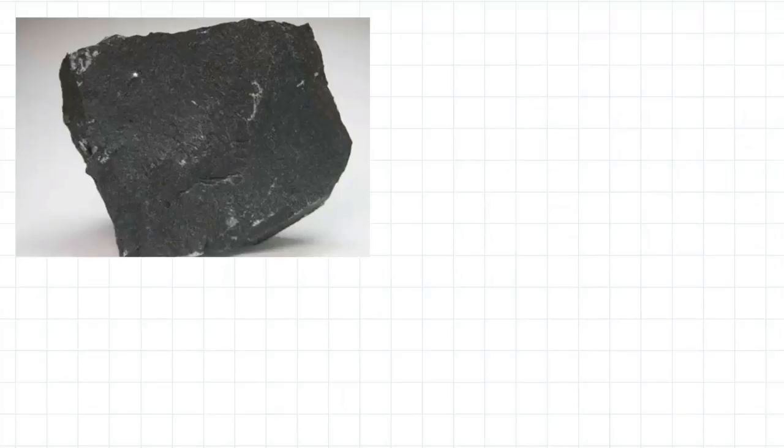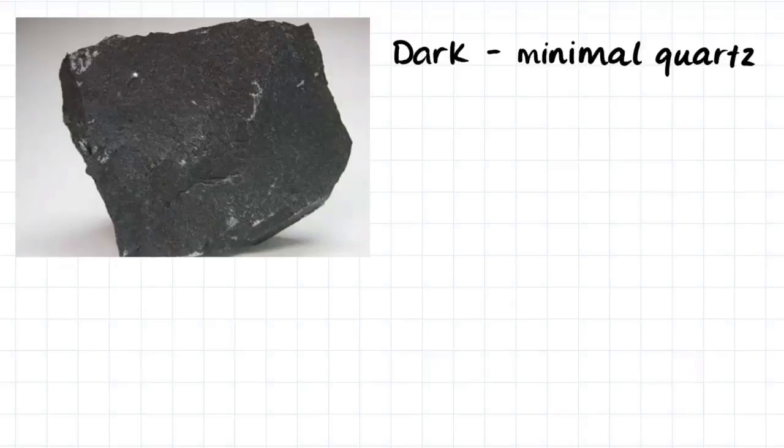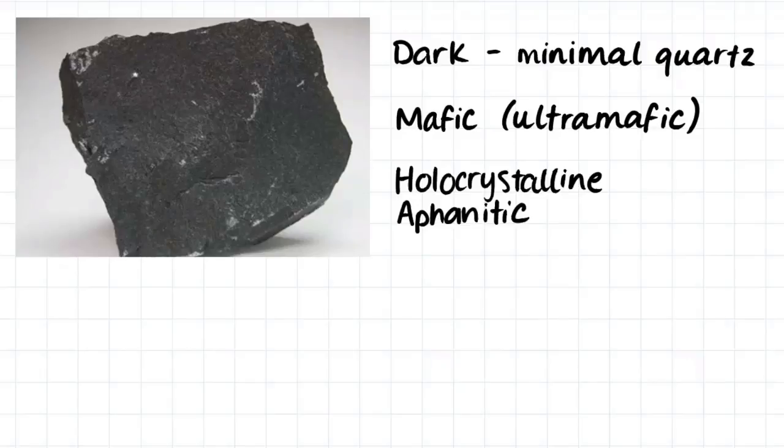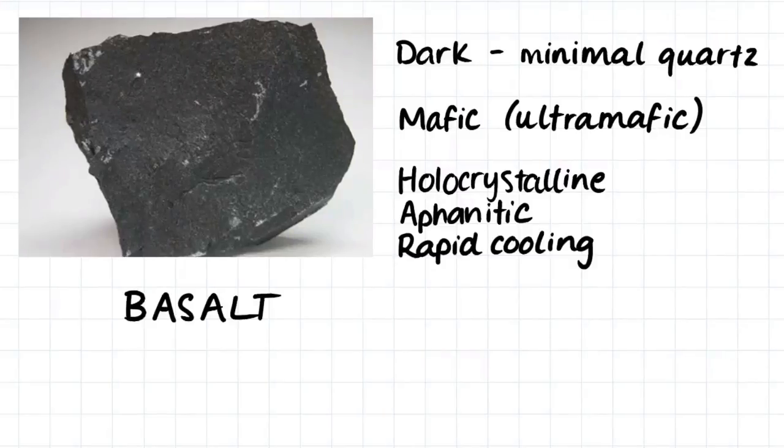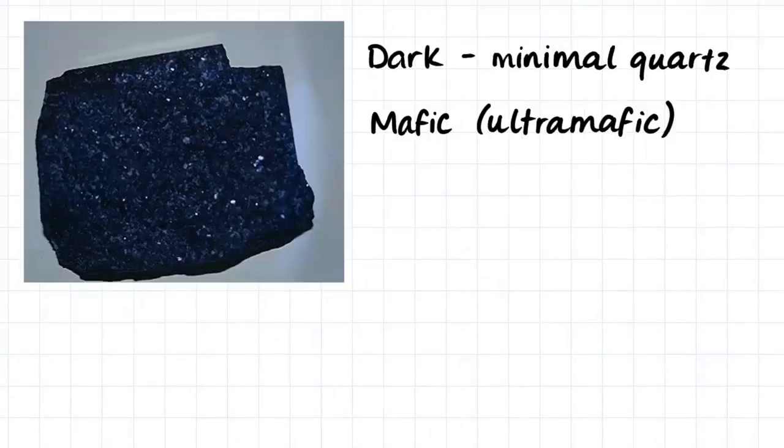Here's our first igneous rock sample. Firstly, I would say that it is rather dark in color and therefore contains minimal quartz within it. Because quartz is silica, I would say the rock is a mafic rock, possibly even ultramafic. I would then say that the rock is holocrystalline, however the crystals are very small and therefore cannot really be seen with the naked eye. Therefore I would probably say that it's an aphanitic rock because the crystals are so small. We can assume that the molten rock cooled very quickly. And finally, a rock which fits all of these descriptors is usually called basalt.